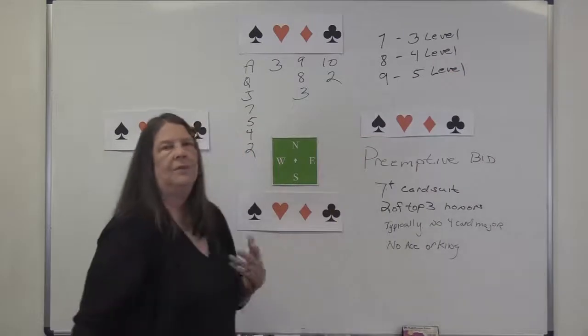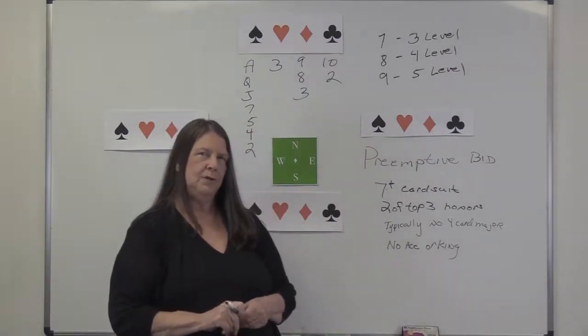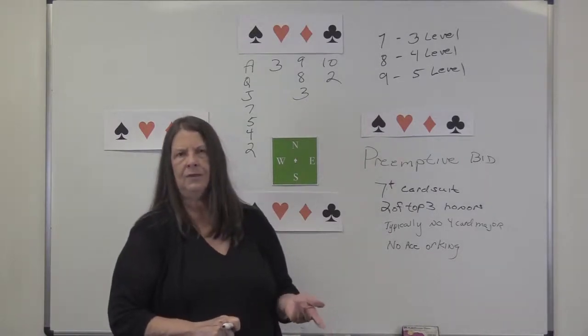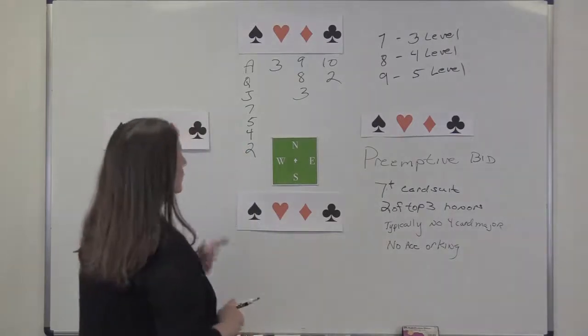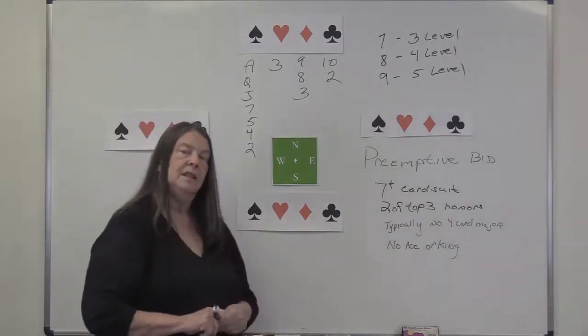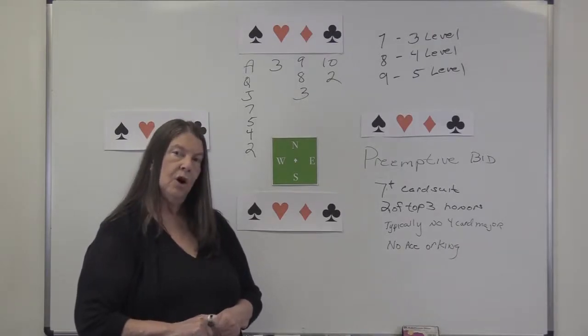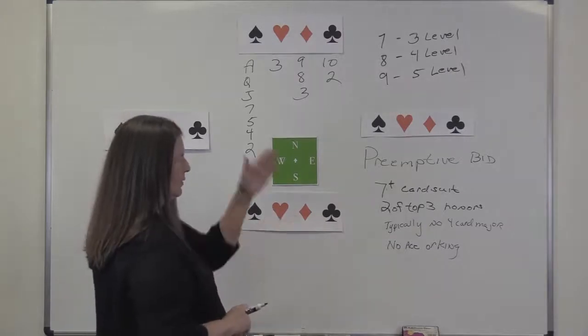And with a nine-card suit, you could open at the five level. Now, when we talk about with a nine-card suit opening at the five level, we're really talking about a minor suit. You typically would not open five hearts or five spades, right? You're just going to open them at the four level. The good thing about a preempt is it can be an opening bid or it can be an overcall. But it still follows these rules.